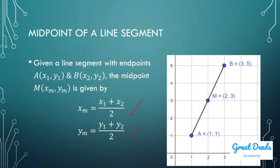For a line segment with endpoints A and B, the midpoint x-coordinate is (3 plus 1)/2 and the y-coordinate is (5 plus 1)/2. We shall return to the equations of lines and the slope-intercept form in a separate lesson. The reason for pulling out the slope-intercept form now is that it is useful when investigating whether lines are parallel or perpendicular.